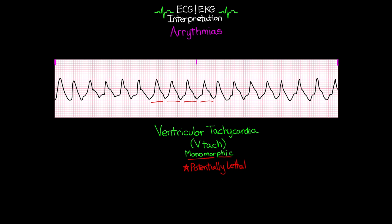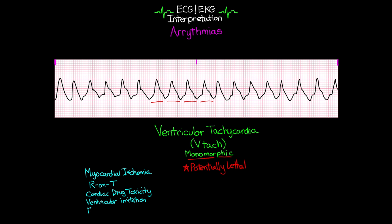There are a few different things that can cause our patient to go into VTAC. These include myocardial ischemia, an R-on-T event, cardiac drug toxicity, ventricular irritation, or even electrolyte imbalance. Some of our defining characteristics for VTAC: we're going to have that wide QRS complex, since this is originating from within the ventricle and the signal is not traveling quickly down the bundle of His and the bundle branches. You're also going to have no discernible P wave, and the heart rate must be greater than 100. The patient may still have a pulse, typically with some of the slower VTACs.